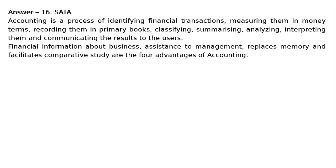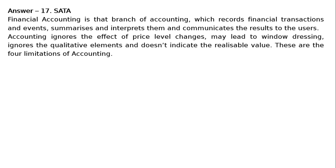Question 17: What do you mean by financial accounting? Explain four main limitations of financial accounting. Answer 17: Financial accounting is that branch of accounting which records financial transactions and events, summarizes and interprets them and communicates the results to the users. Four limitations: accounting ignores the effect of price level changes, may lead to window dressing, ignores the qualitative elements and does not indicate the realizable value.